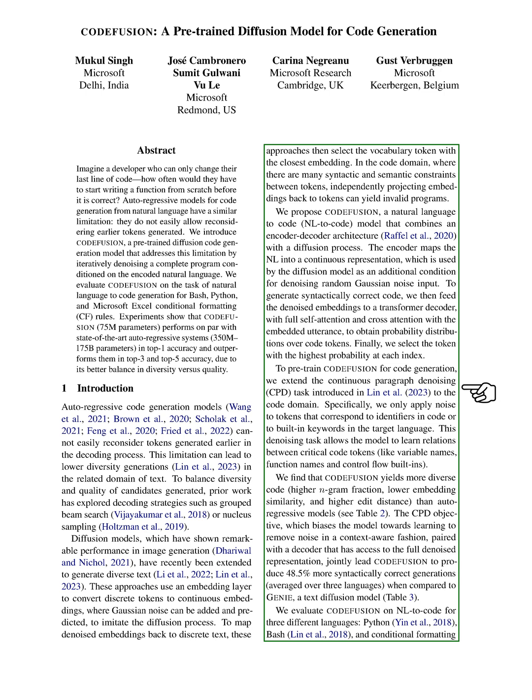Specifically, we only apply noise to tokens that correspond to identifiers in code or to built-in keywords in the target language. This denoising task allows the model to learn relations between critical code tokens like variable names, function names, and control flow built-ins.